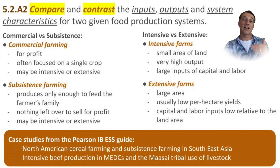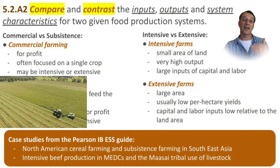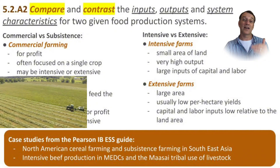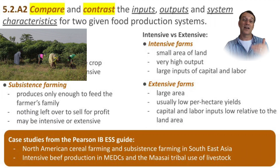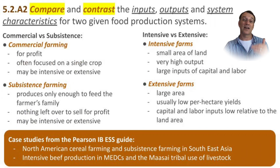There are many different ways to produce food, each with its own characteristics. Commercial farming aims to produce food for sale, often focusing on a single crop and using a lot of technology. Subsistence farming, on the other hand, produces just enough to feed a family. Some farms are intensive, using a lot of labor and resources on a small area, while others are extensive, spreading out over large areas. Understanding these differences helps us evaluate the sustainability of different farming methods.